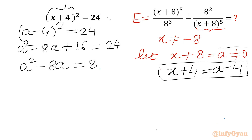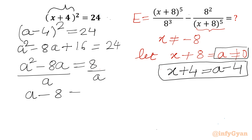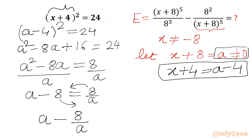Now a is nonzero, so we can divide both sides by a. So we get a minus 8 equal to 8 over a. Taking the 8 over a term to the left, we have a minus 8 over a equal to 8.